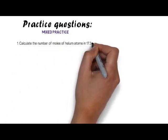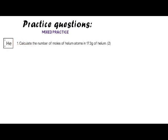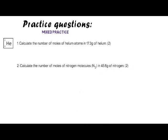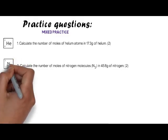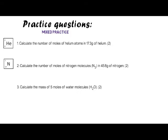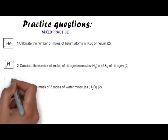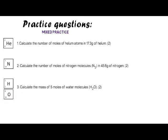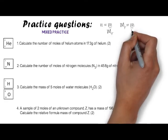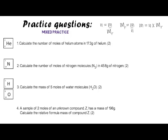These practice questions cover all three skills. Question one: calculate the number of moles of helium atoms in 17.3 grams of helium. Question two: calculate the number of moles of nitrogen molecules (N₂) in 45.8 grams of nitrogen. Question three: calculate the mass of 5 moles of water molecules (H₂O). Question four: a sample of 2 moles of unknown compound Z has a mass of 196 grams — calculate its relative formula mass. Pause the video and try them all.